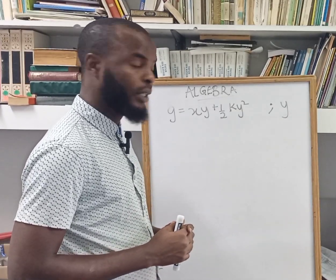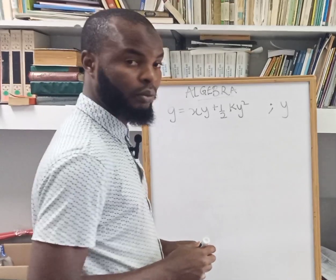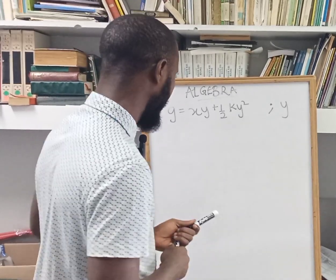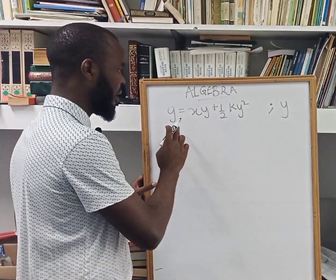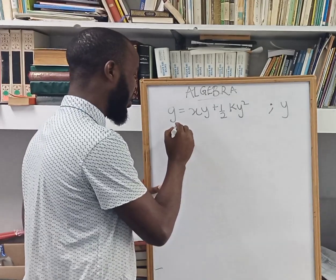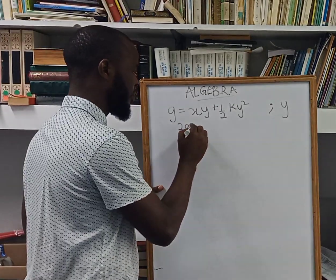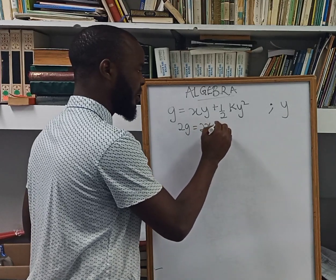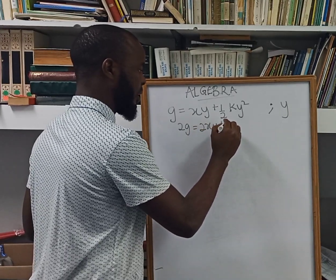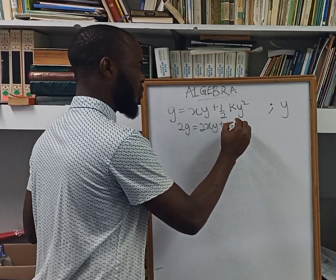So the first step for us to do here is to multiply by 2. Okay, so doing that here, multiplying each of the terms by 2, I'm going to have 2g equals 2xy plus ky squared.